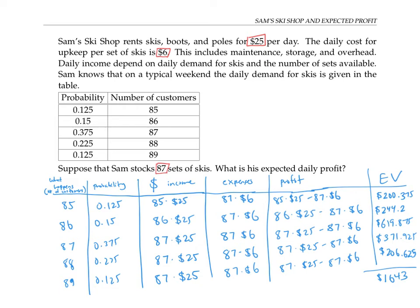Notice that since the expenses column is always the same, no matter how many customers show up, we could have done this problem a different way, and just focused on the expected income and subtracted the fixed expenses at the end.